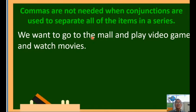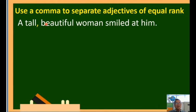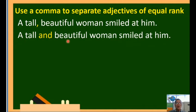Rule number three: use a comma to separate adjectives of equal rank. Example: 'A tall, beautiful woman smiled at him.' We have two adjectives of equal rank — 'tall' and 'beautiful.' How do we know they are of equal rank? Malalaman natin kapag itong dalawang ito ay pwede nating pagdugtungin gamit ang conjunction 'and': 'A tall and beautiful woman smiled at him.' Since the meaning does not change, these adjectives are equal rank and we use a comma between them.